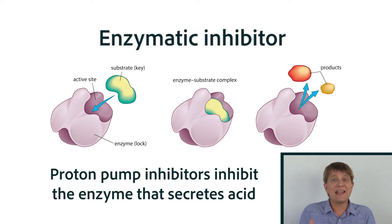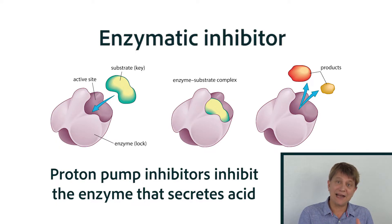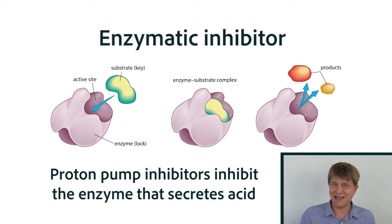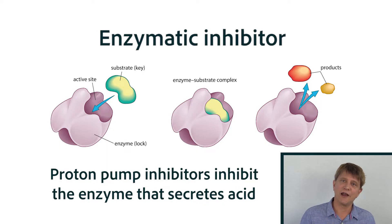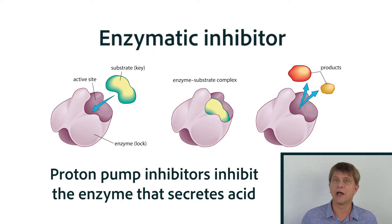Adding a bit more detail, but still as a broad overview: the way in which we get an acidic stomach is to have a certain cell in the lining of the stomach secrete hydrogen ions. That's the parietal cell. It actually secretes the hydrogen ion into the lumen of the stomach, where it combines with a chloride ion to become hydrochloric acid.